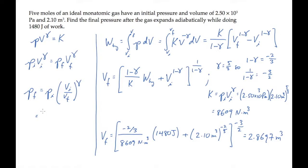Bringing this value back, we now know all the values on the right hand side. Substituting them and calculating the final pressure, we find it equals 1.49 times 10 to the third pascals.